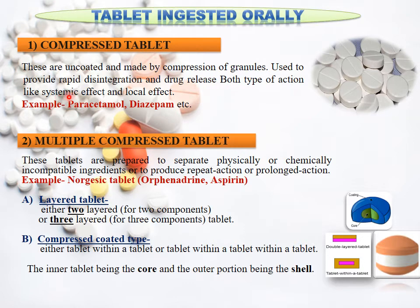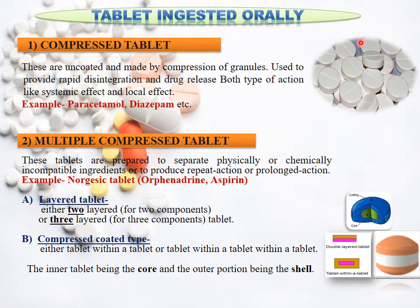Next is the multiple compressed tablet. Multiple compressed tablets are used to suppress physical and chemical incompatibilities. As you can see in the picture, the tablet has upper and bottom layers that are similar, while the middle layer is different. This is called a multiple compressed tablet. It is further classified into two-layer tablet and compressed coated tablet. The layers can be two or three layered. In the compressed coated tablet, the upper part is called the shell and the inner part is called the core — this is a tablet within a tablet.